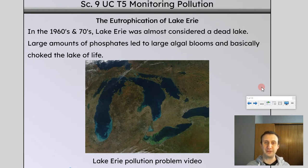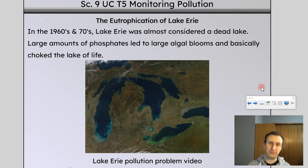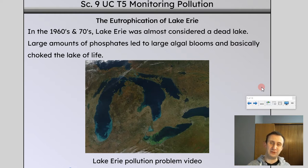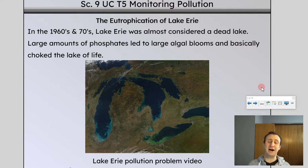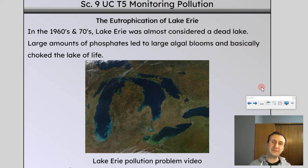A great example of this is eutrophication of Lake Erie. When we talk about eutrophication, what that is, is when the oxygen content goes down a huge amount and we basically consider the aquatic ecosystem to be dead. This happens often because of a large amount of nitrates and phosphates — nitrogen and phosphorus-containing compounds — making it into the water.